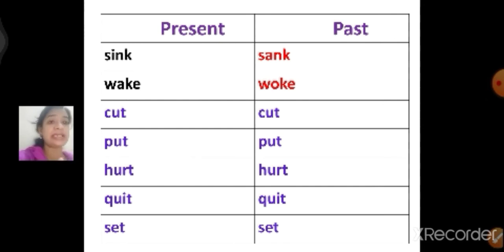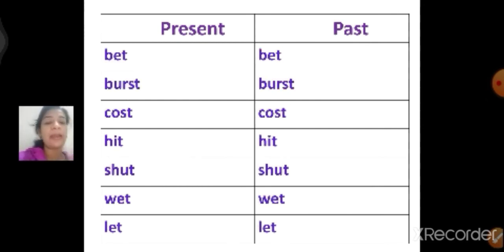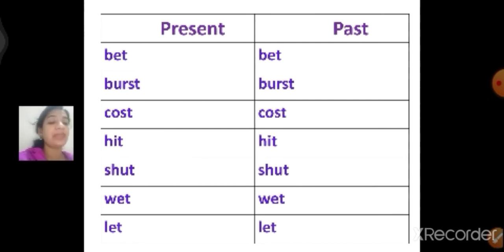Now children, there are some verbs where the past tense form is the same — for present tense and past tense there is no change. So: cut, cut. Put, put. Hurt, hurt. Quit, quit. Set, set. Bet, bet. Burst, burst. Cost, cost. Hit, hit. Shut, shut. Wait, wait. Let, let.